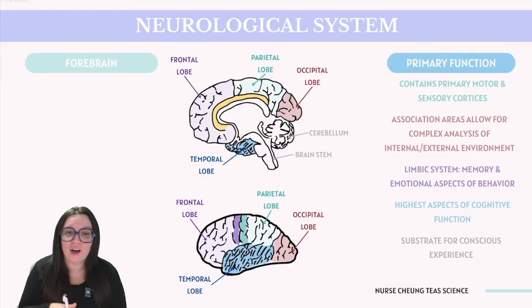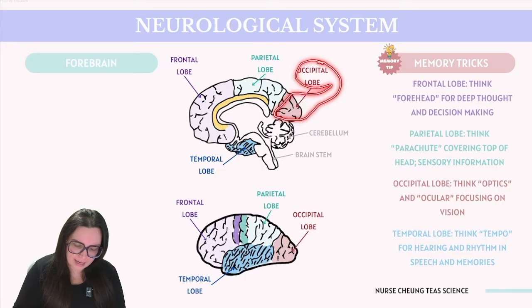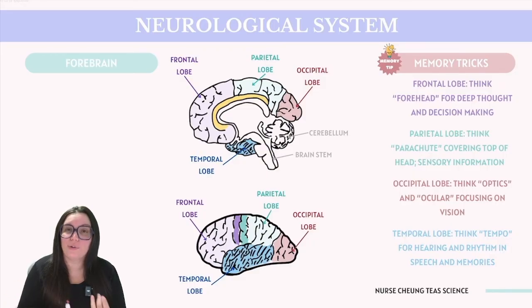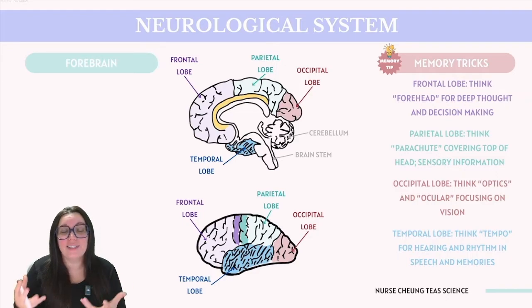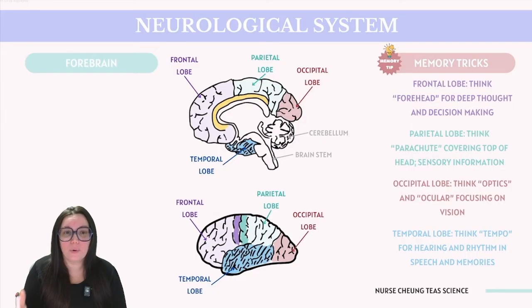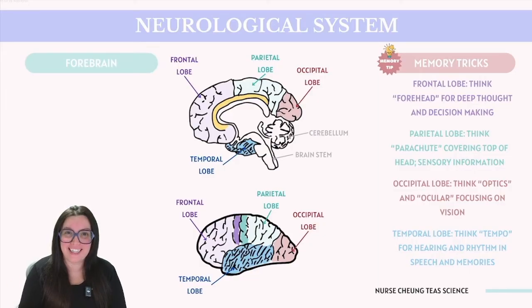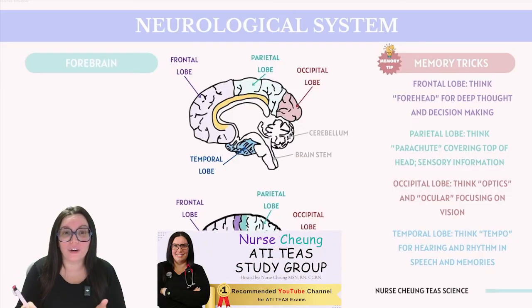Lastly, we have the occipital lobe and the temporal lobe. The occipital lobe's primary functions include processing, integration, and interpretation of visual stimuli; it houses the primary visual cortex where visual signals are received from the retinas. The temporal lobe is important for processing auditory information and is home to the primary auditory cortex. It plays a key role in the formation of long-term memory, is involved in speech comprehension through Wernicke's area on the left temporal lobe, and assists in recognizing and processing emotion and language.